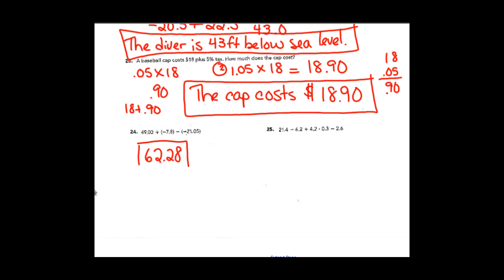If you didn't get that answer, pause the video again and see if you can work it out. If you can't find your error, make sure I stop at your desk tomorrow. A little hint: I would have taken forty-nine and three hundredths and subtracted seven and eight tenths, then changed the subtraction to add the opposite, which means adding twenty-one and five hundredths to that result. Your error might be in changing the integer part — see if that helps.